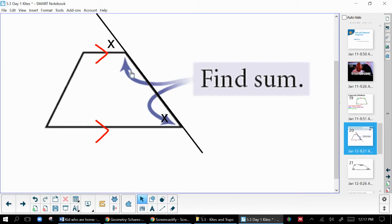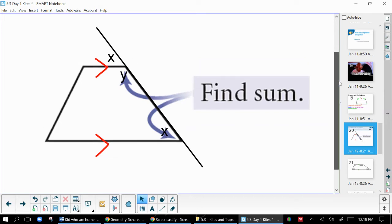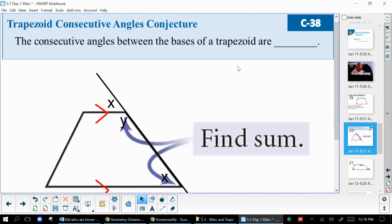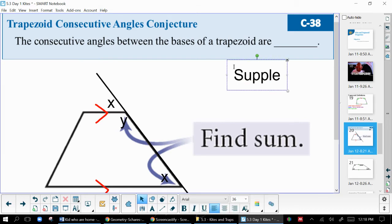So then think about what the relationship is right here. If I put a y in there, what do I know about x and y? Well, they're a linear pair. They add up to 180 degrees. And because this angle is also the same as x, my consecutive pair has to be supplementary too. They have to add up to 180. So the consecutive angles between bases are supplementary.